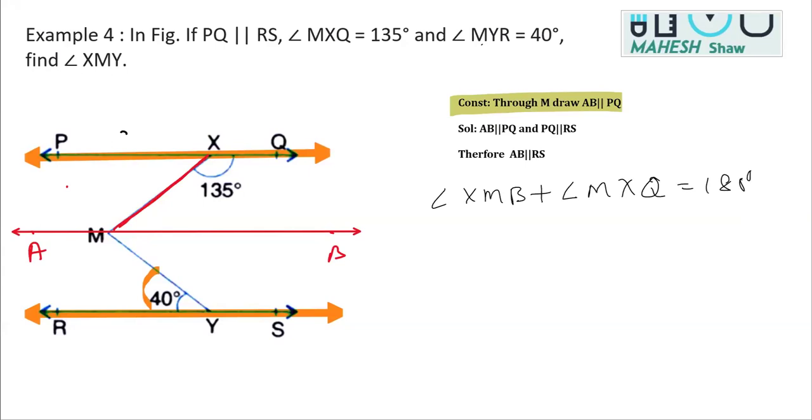Now we have the value of one angle, so we can find the other. This is 135 degrees equals 180 degrees. Now, transposing 135, we'll get angle XMB should be 180 minus 135, so it will give you 45 degrees. We got this angle XMB.